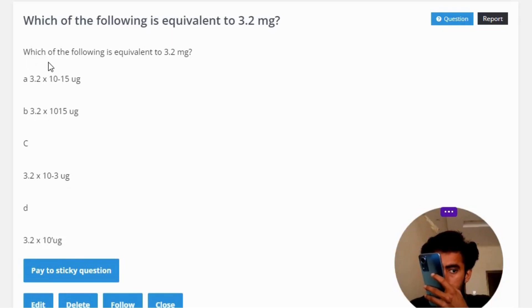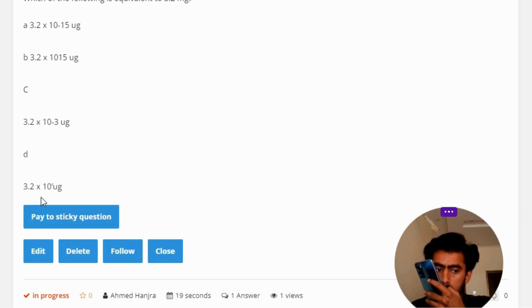Which of the following is equivalent to 3.2 mg? Option a: 3.2 x 10^-15 ug. Option b: 3.2 x 10^15 ug. Option c: 3.2 x 10^-3 ug. Option d: 3.2 x 10^6 ug.